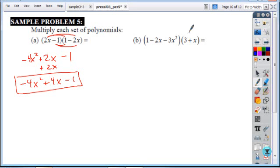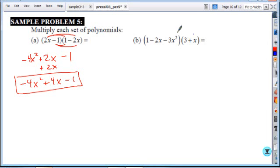If you want, you could distribute the 3 first and then the x, or you can start with the trinomial and distribute through to the binomial. So I'll just go from left to right, that's how most of you would probably do it. So as we move from left to right, distribute the 1, we get a 3 and a plus x.